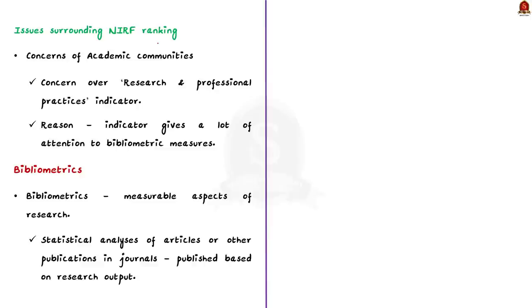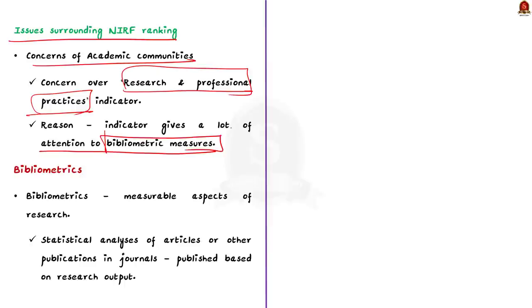Now, moving on to see about the issues surrounding NIRF ranking. Many academic communities have concern about the indicators. Particularly, many have raised a concern over the indicator of research and professional practices. This is because this particular indicator gives a lot of attention to bibliometric measures. Now, what is this bibliometrics?